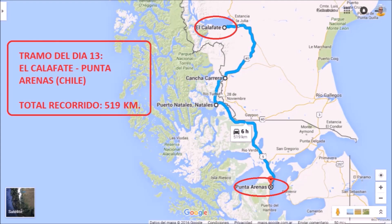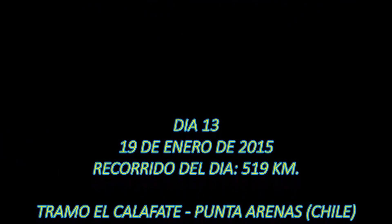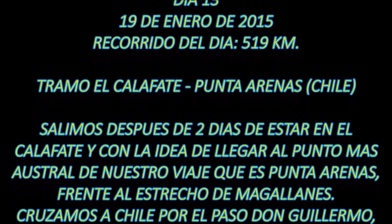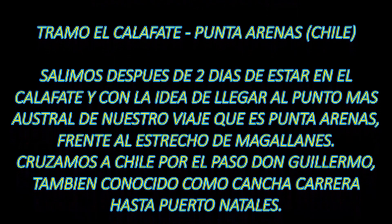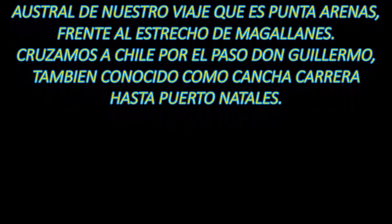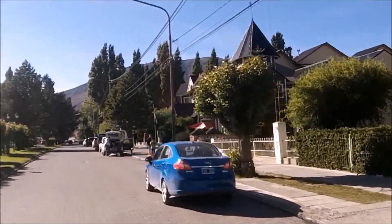Arranca una nueva jornada donde vamos a dejar El Calafate después de dos días. El objetivo de hoy es llegar hasta Punta Arenas, la ciudad más austral de Chile sobre el Estrecho de Magallanes. El trayecto es de solo 519 kilómetros, pero promete ser muy intenso ya que tenemos que cruzar a Chile por el Paso Don Guillermo, también conocido como Cancha Carrera, ubicado al sur del Calafate y antes de llegar al río Turbio.